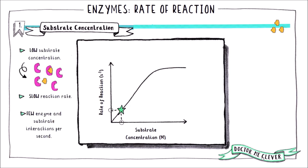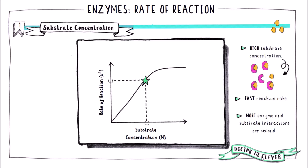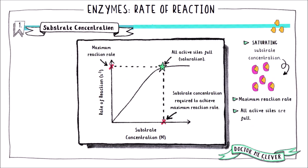At a low substrate concentration the rate of reaction is also low, because there are few substrate molecules per given volume, meaning there is a low chance that the substrate and enzyme will collide resulting in a reaction and product formation. As the substrate concentration increases we move along the x-axis and see that the rate of reaction on the y-axis increases too, and this happens in a linear manner — the graph is a straight line to begin with until the rate of reaction peaks.